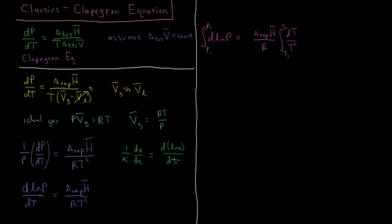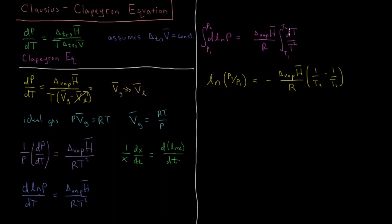Evaluating both integrals gives us the Clausius-Clapeyron equation: ln(P2/P1) = −(ΔvapH̄ / R)(1/T2 − 1/T1). The integral of dT/T² gives −1/T evaluated at the limits, yielding (−1/T2) − (−1/T1), which equals 1/T1 − 1/T2, or equivalently −(1/T2 − 1/T1).